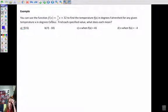We have a function here, f of x equals 9 fifths x plus 32. It's used to find the temperature in f of x degrees Fahrenheit for any given temperature x in Celsius. So x is Celsius, and f of x, or what used to be y, is Fahrenheit. We're asked to find the specific value and talk about what each value means.